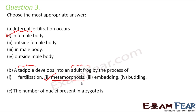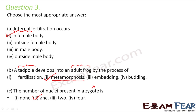The number of nuclei present in a zygote is — a zygote is the structure immediately formed after fertilization, so it is a single cell structure. Later it undergoes repeated cell division to form multiple cells. Since it is a single cell structure, there is obviously one nucleus present in a zygote.